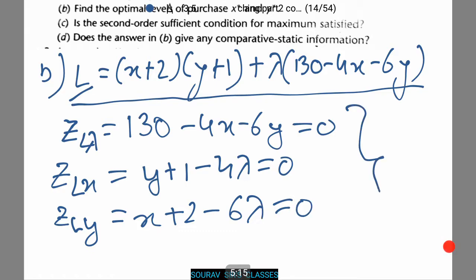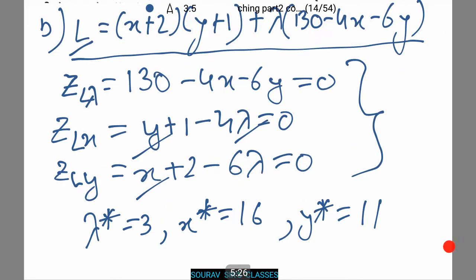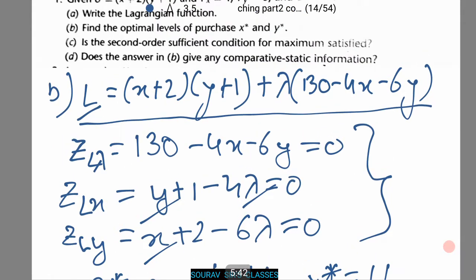Now we'll use these three conditions as simultaneous equations to find the value of x, y, and lambda. Let's see what the value comes. This value obtained here is lambda star equals 3, x star equals 16, and y star equals 11. Thus these are the constraints that we were given and these are the answers that was required in our original question.